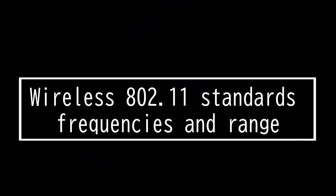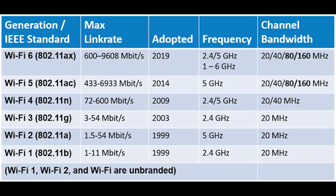This video is on wireless 802.11 standards, frequencies, and range. Radio frequency channels are an important part of wireless communication. A channel is a band of RF used for wireless communication. There are different IEEE wireless standards that specify the channels that can be used.